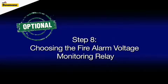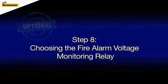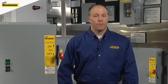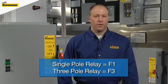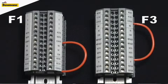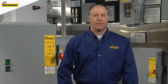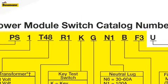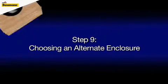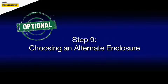Selecting the voltage monitoring relay component in step eight also depends upon your local code requirements. Cooper Bussmann offers two options: one is the single pole relay or the F1 option, and the other is the three pole relay or the F3 option. This provides the ability to meet code requirements for communication with the fire alarm control panel in all 50 states and Canada. Best of all, Cooper Bussmann offers either option at the same price. For our example, we will add the F3 code to our part number sequence.